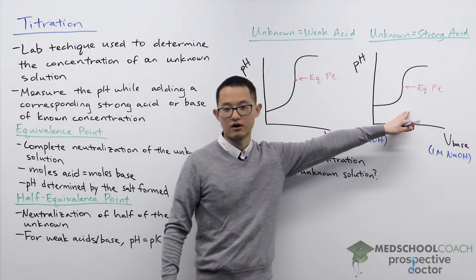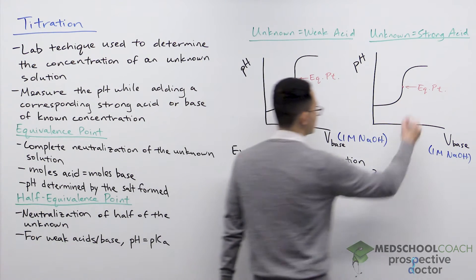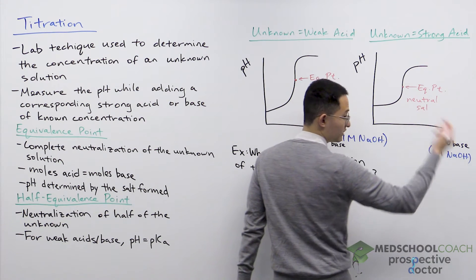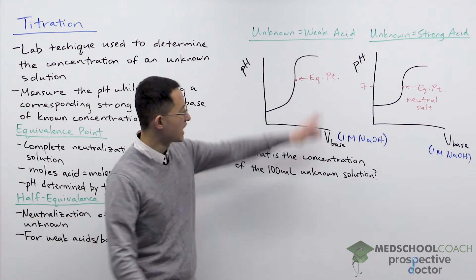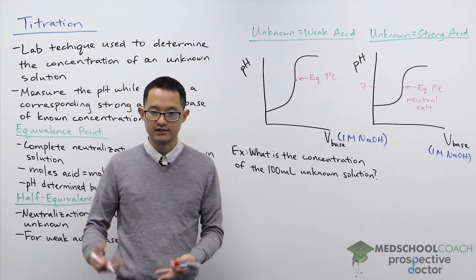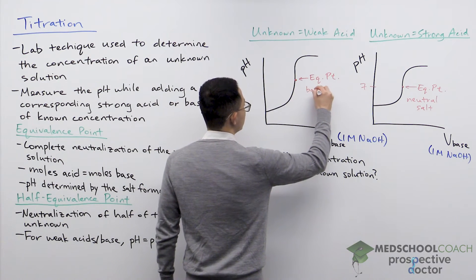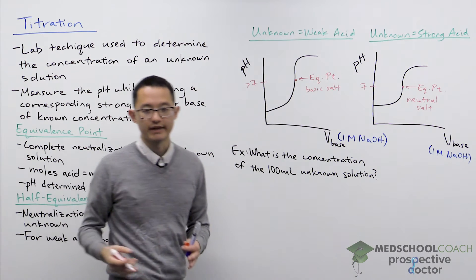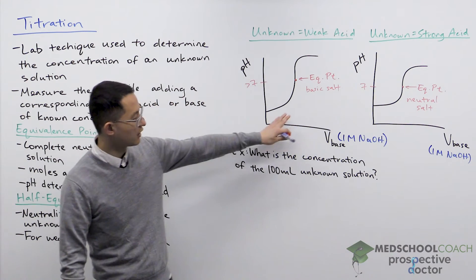The pH at the equivalence point depends on the type of salt formed. When you combine a strong acid with a strong base you end up with a neutral salt, so the pH at the equivalence point is 7. When you titrate a weak acid with a strong base, the salt formed is a basic salt — it has no acidic properties but is weakly basic — so the pH at the equivalence point is greater than 7. How much greater than 7 depends on the specific weak acid that was the unknown.